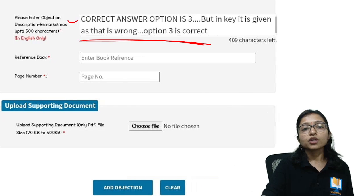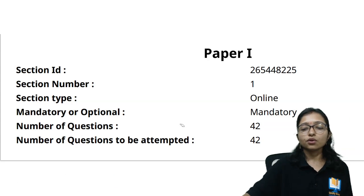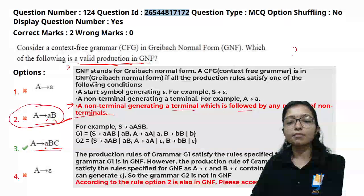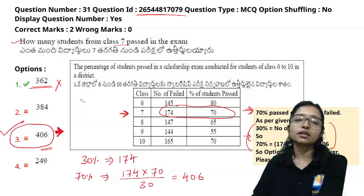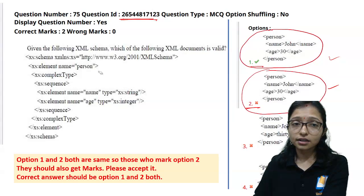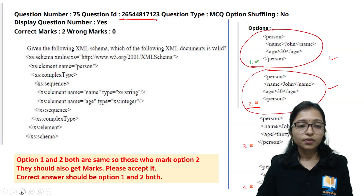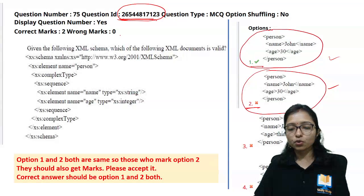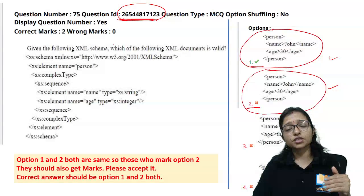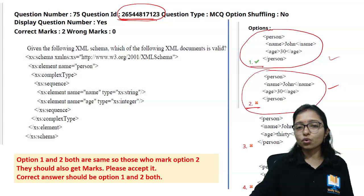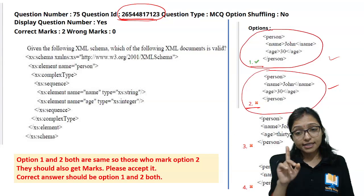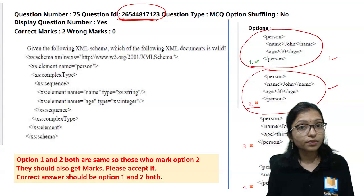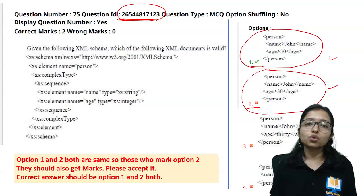In total you can potentially gain around 6 to 8 marks if challenges are accepted. If you have any other doubt, post the question ID in the comment section. I will check it. However, time is limited for challenges, so collect all your questions and do all the challenges together, one by one.